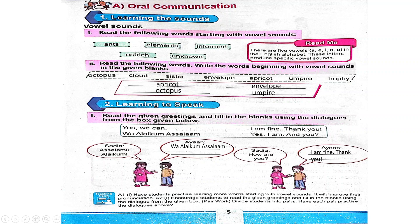Read the following words and write the words beginning with vowel sounds: Octopus, cloud, sister, envelope, apricot, umpire, trophy.